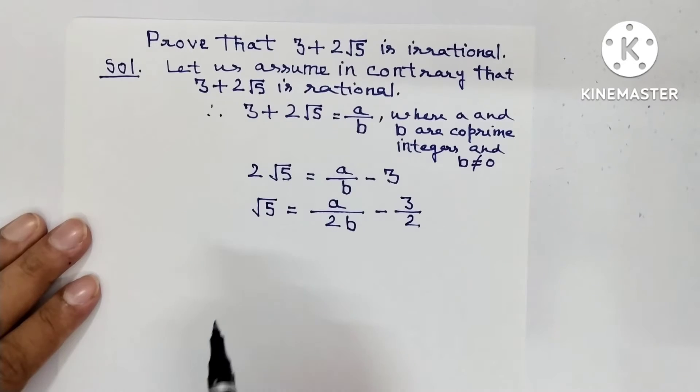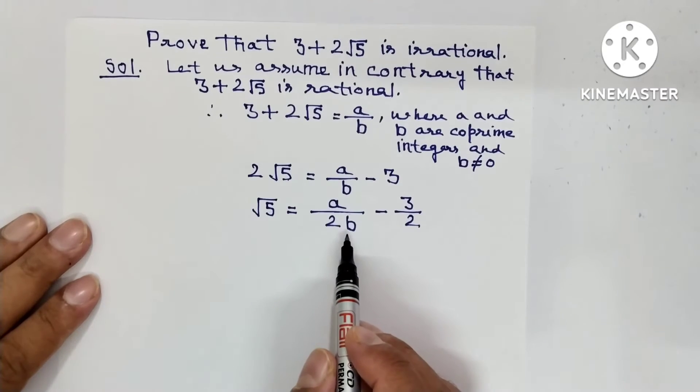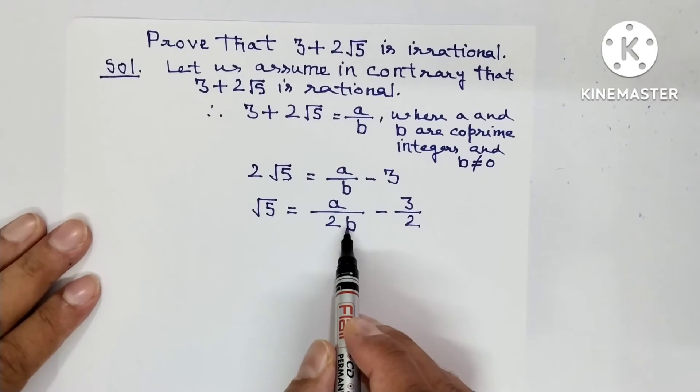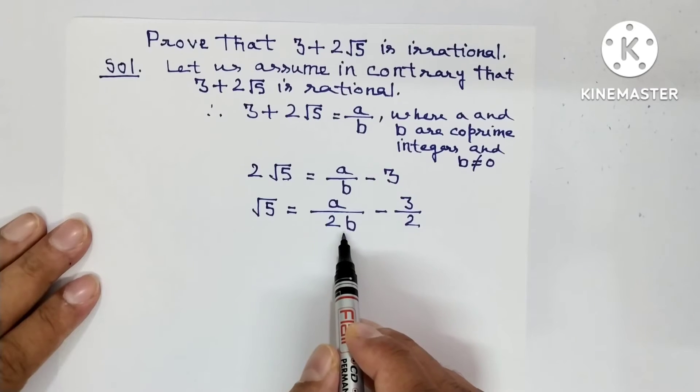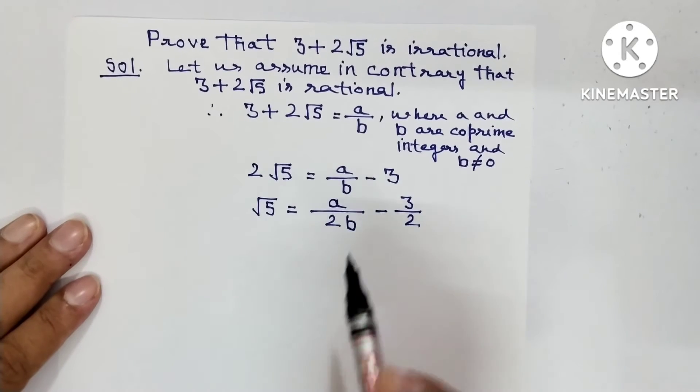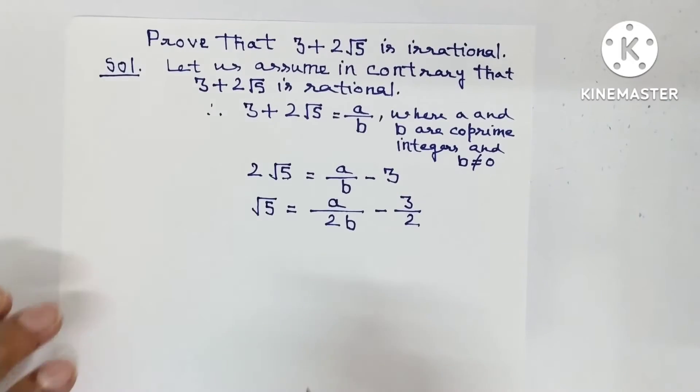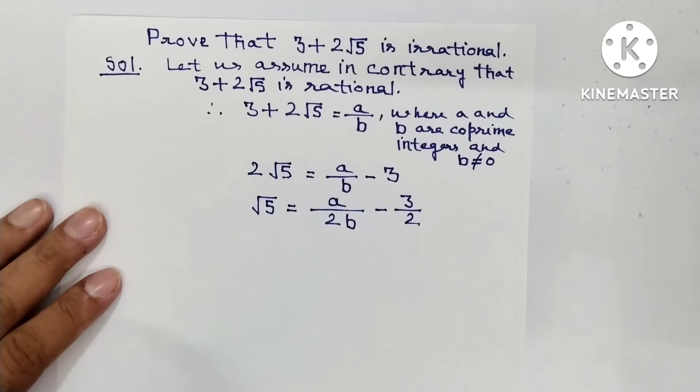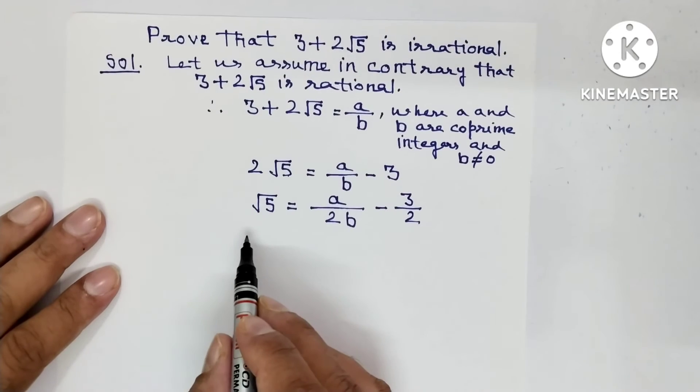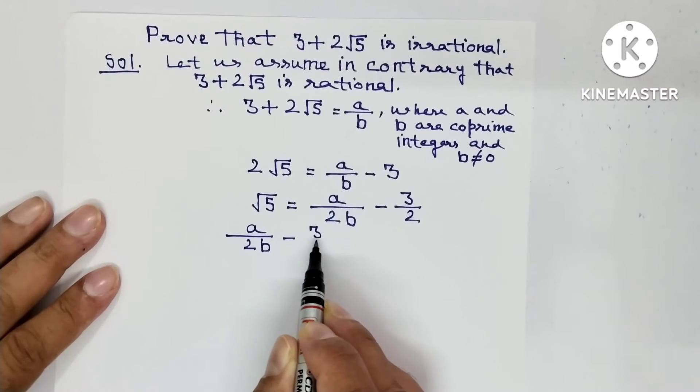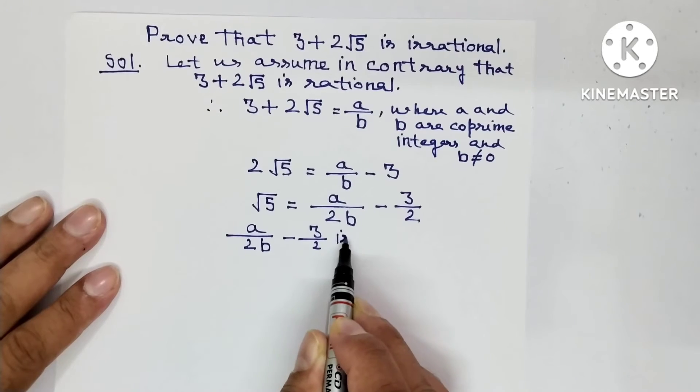Now, under root 5 equals A upon 2B minus 3 upon 2. So you can write A upon 2B minus 3 upon 2 is rational.